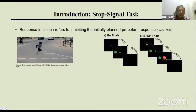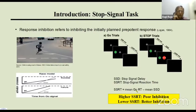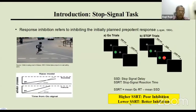Performance on this task is explained by the race model, which hypothesizes an independent race between the go and stop processes. Whichever process reaches the activation threshold first determines the response. This model yields a metric called Stop Signal Reaction Time (SSRT), calculated as mean correct go RT minus mean stop signal delay. Higher SSRT indicates poor inhibition; lower SSRT indicates better inhibition.